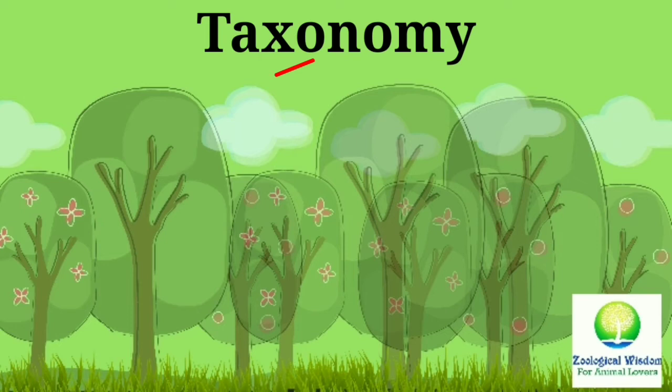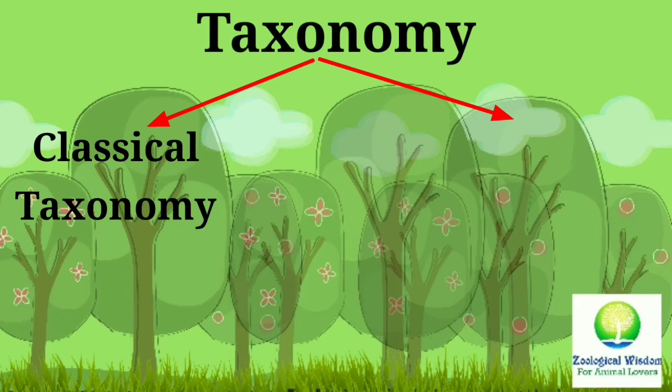Taxonomy is divided into two major branches. Classical Taxonomy is based on information available and attempts to classify organisms according to their origin, evolution, and variation.